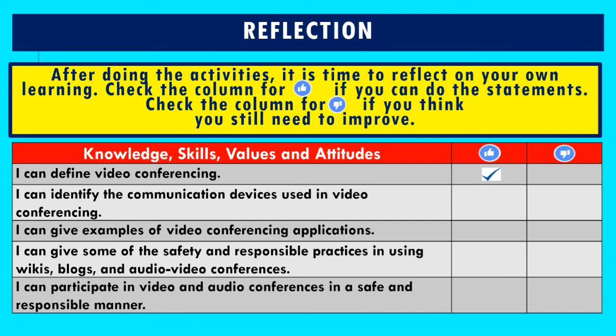After doing the activities, it is time to reflect on your own learning. Check the column for thumbs up if you think you can do the statements. Check the column for thumbs down if you think you still need to improve. For example, 'I can define video conferencing.' If you think you can do the statement, check thumbs up. If you think you still need to improve, check thumbs down.